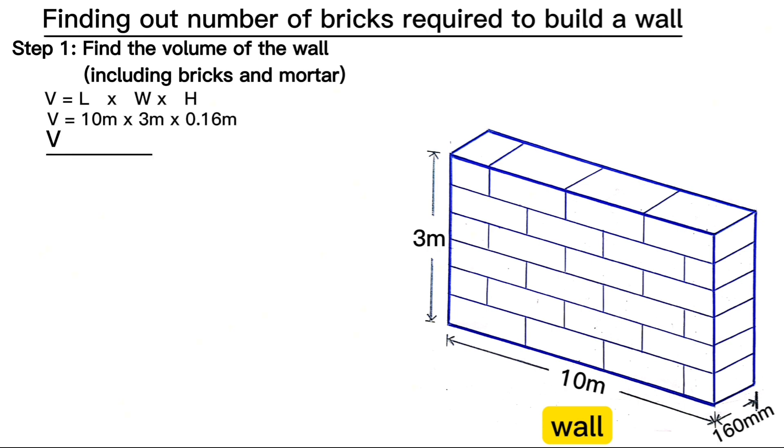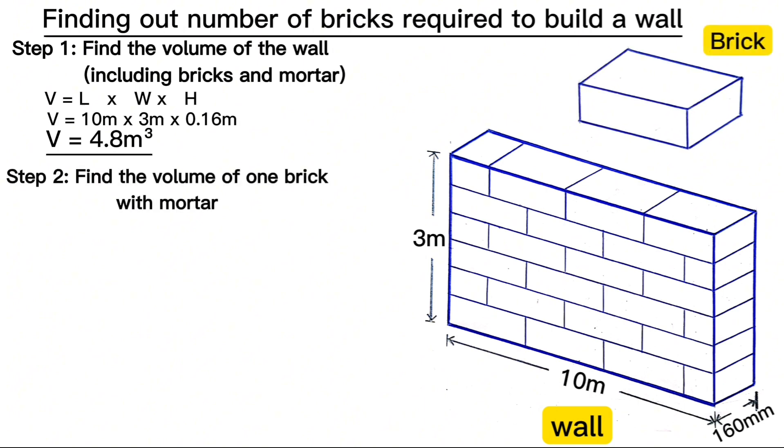Step two: considering a stretcher bond wall with bricks of size 230 millimeters along its length, 160 millimeters along the width, and 70 millimeters along the height. Different countries have different brick sizes, and still the procedures remain the same.